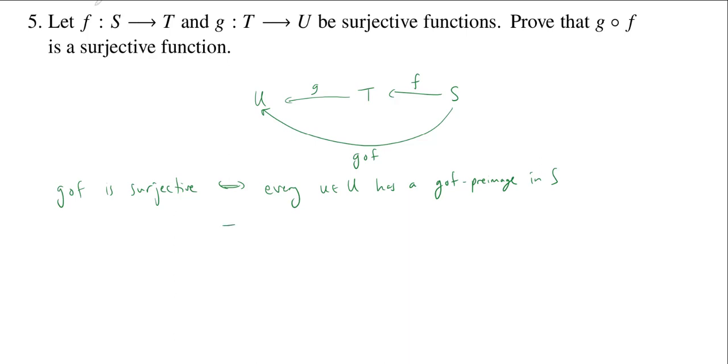So that means that there's going to be some element of s which is mapped by g composed f to u. OK, so we could say if and only if for every u in u, there exists some s in s such that g composed f applied to s is equal to u. OK, u has a g composed f preimage, call it s. OK, that's what we want to prove.